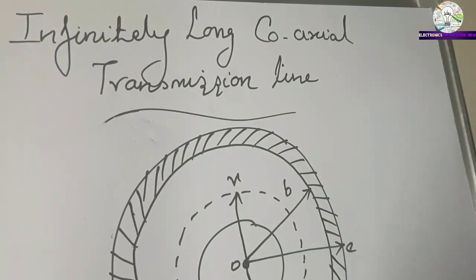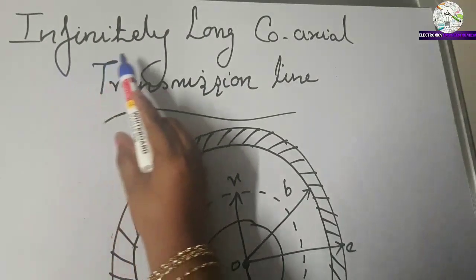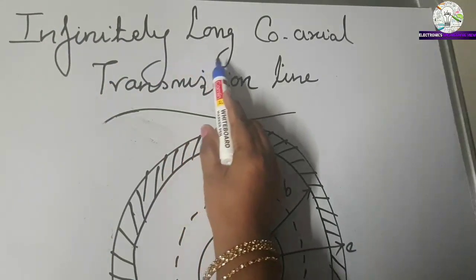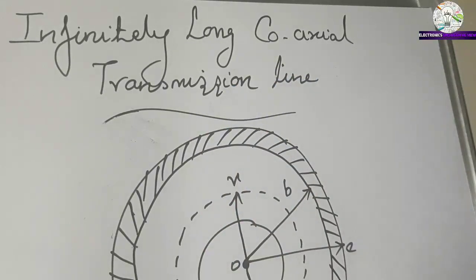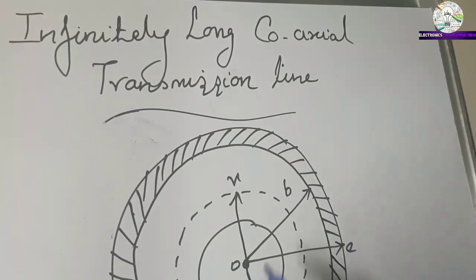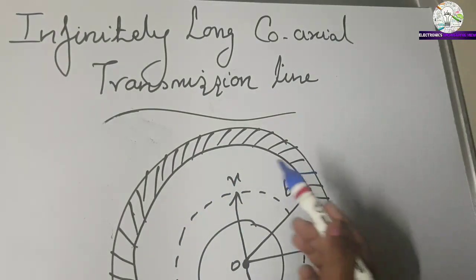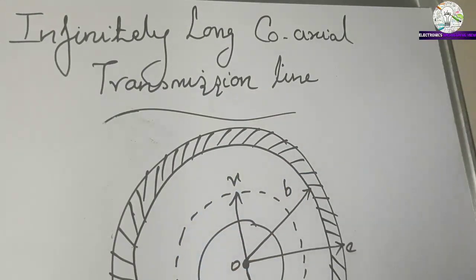Today we have discussed the infinitely long coaxial transmission line. It is one of the applications of Ampere's circuit law. It consists of two concentric cylinders having their axis along the Z-axis.